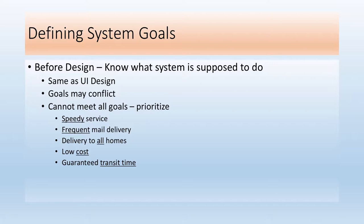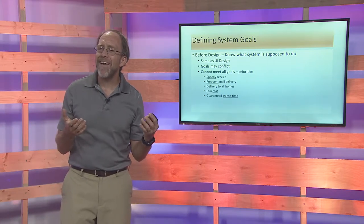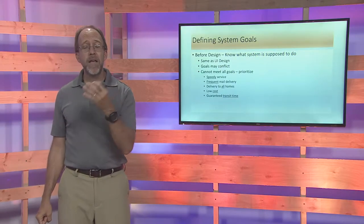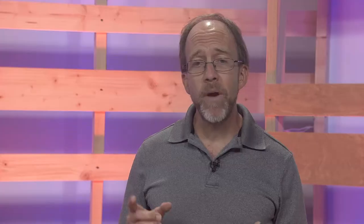Goals can vary, so let's look at a set and prioritize them. Consider: speedy service, frequent mail delivery, delivery to all homes, low cost, and guaranteed transit time. Looking at those goals, you can tell they're probably describing a delivery system — a huge system. Amazon, the U.S. Postal Service — all large organizations want to optimize this arrangement, which involves more than just humans, machines, or trucks. It's a full system requiring full system optimization.